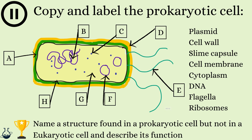Based on what we've just discussed, pause the video here to copy and label the diagram of the prokaryotic cell shown, so you have a copy for your revision notes. The labels are listed down on the right-hand side, and if you are unable to draw the diagram, just match the letters to the label. If you finish, try the challenge. OK, so let's go through the answers, starting with A and working our way around. Annotate your work as we go.